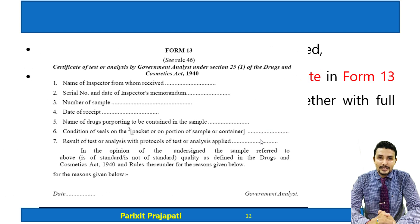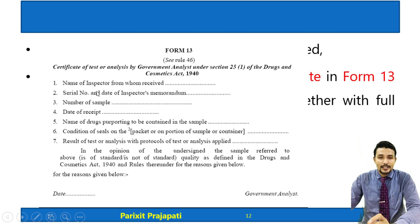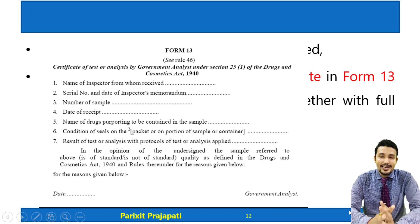This is an example of Form Number 13 — the Certificate of Test or Analysis by Government Analyst. It includes details such as the name of the inspector, serial number and date of the inspector's memorandum, name of the sample, date of receipt, name of the drug, condition of seals, result of test or analysis with protocols, and the date and signature of the Government Analyst.